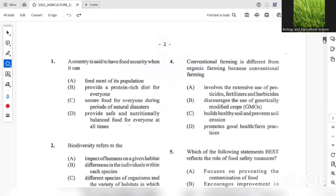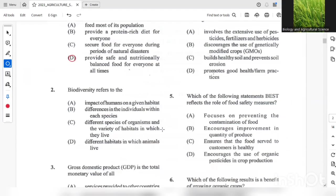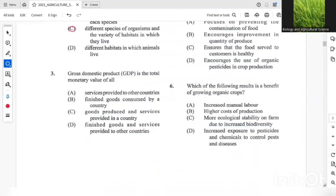Alright, so the first question: a country is said to have food security when it can - the answer here should be provide safe and nutritionally balanced food for everyone at all times. Question 2, Biodiversity refers to the different species of organisms and the variety of habitat in which they live. Question 3, Gross Domestic Product: the gross domestic product is the total monetary value of all goods and services provided in a country.